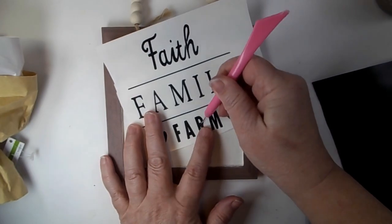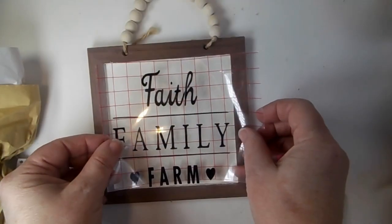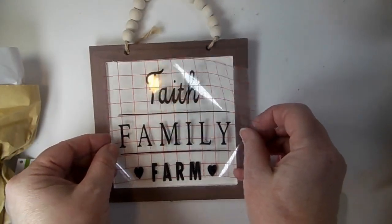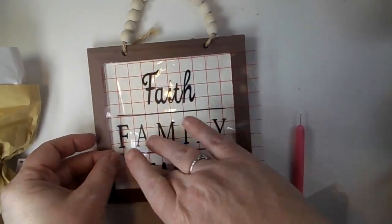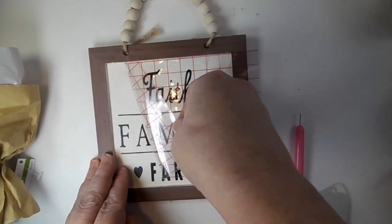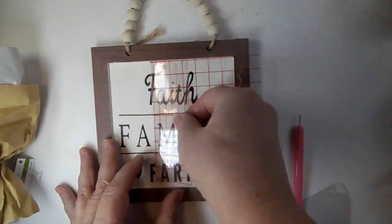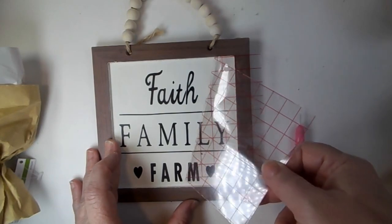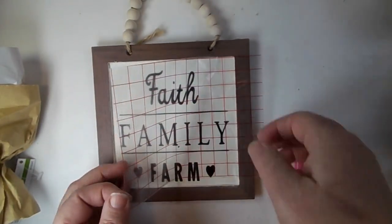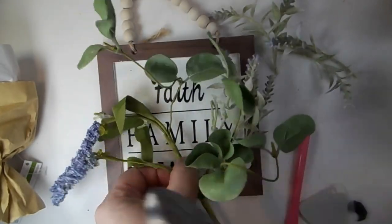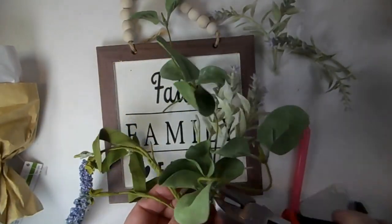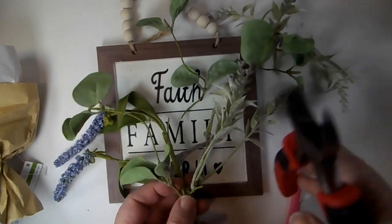So just painting that in there and then let it dry. I went on my Cricut and from design bundles, I had gotten a farmhouse bundle and I thought this one was adorable. Faith, family, and farm. How cute is that? Pretty simple. You could also print something out and use pencil or carbon paper on the other side.